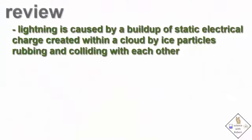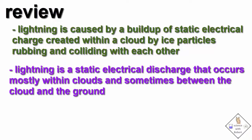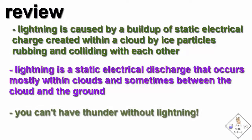Let's review. Lightning is caused by a buildup of static electrical charge created within a cloud by ice particles rubbing and colliding with each other. Lightning is a static electrical discharge that occurs mostly within a cloud and sometimes between the cloud and the ground. You can't have thunder without lightning.